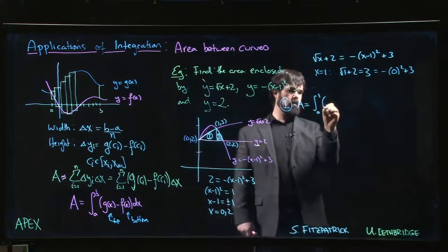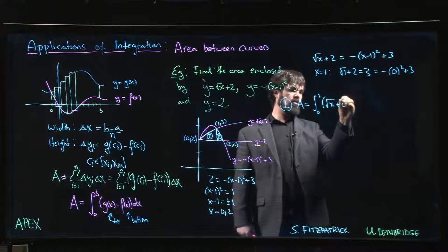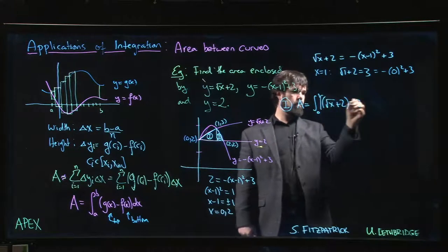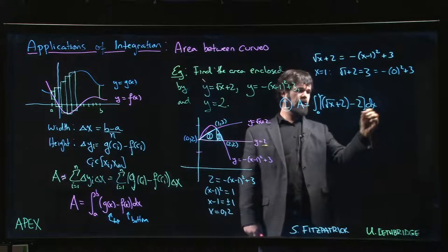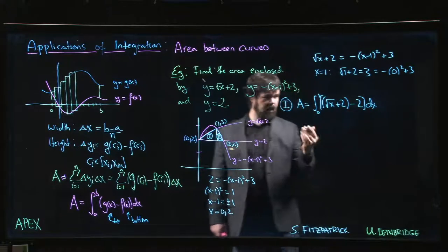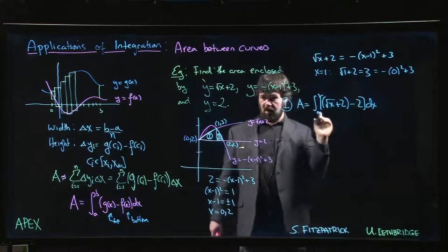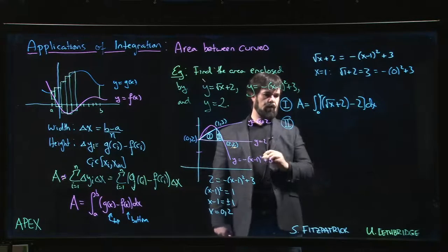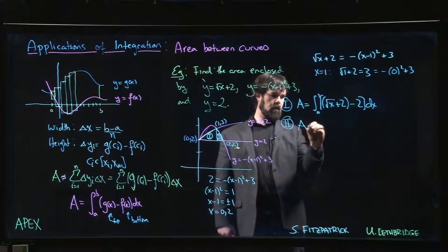Because region 1, we have the integral from 0 to 1, upper minus lower. Upper curve in this case is √(x+2) minus the lower curve which is just y = 2, dx. Actually that's not so bad. I mean that's just √x, we can do that, power rule, fine.